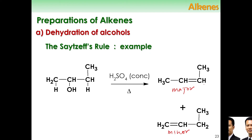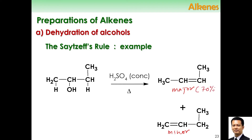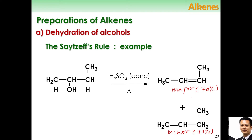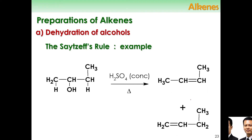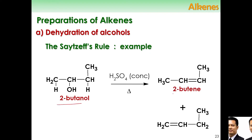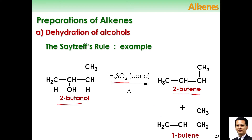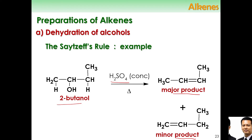What is major and minor product? Major product means it is the one that is favored to be produced — maybe this one can yield up to 70%, and the rest is the minor product at 30%. Major means more favored to be produced compared to the minor. Specifically, this is 2-butanol, and the product of the dehydration of alcohol with acid catalyst H2SO4 gives 2-butene as the major product and 1-butene as the minor product.